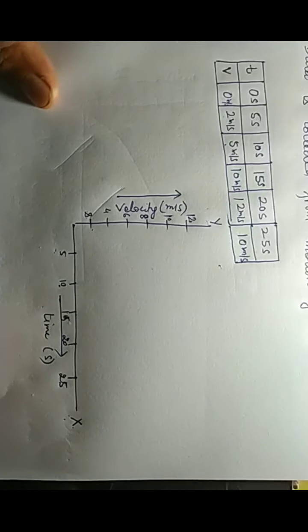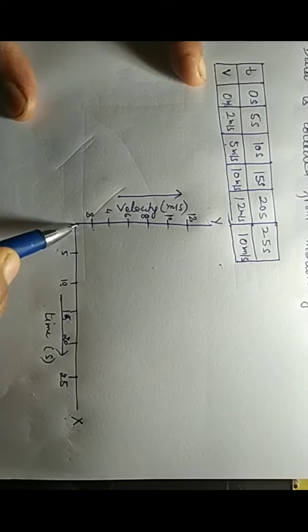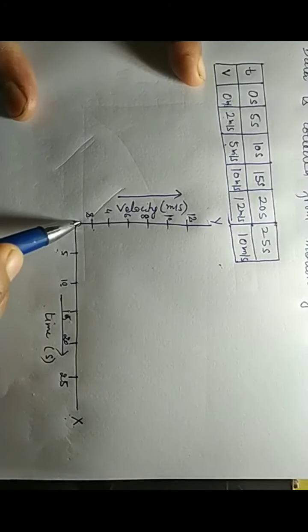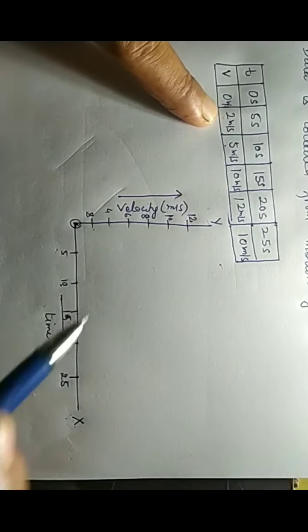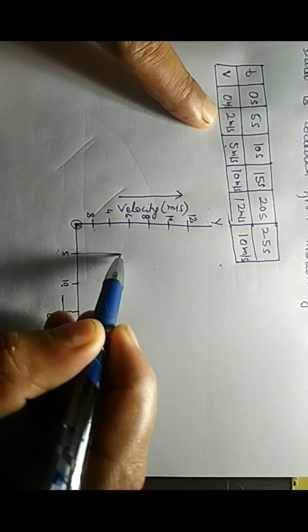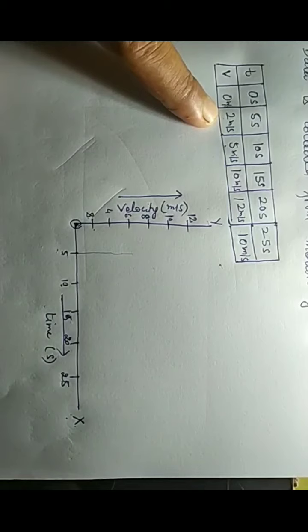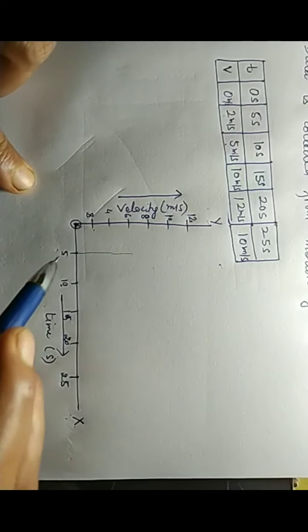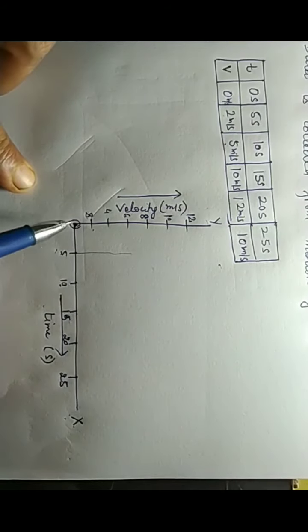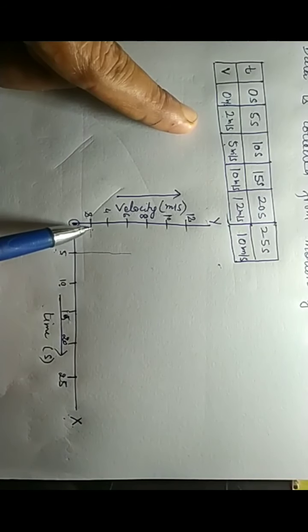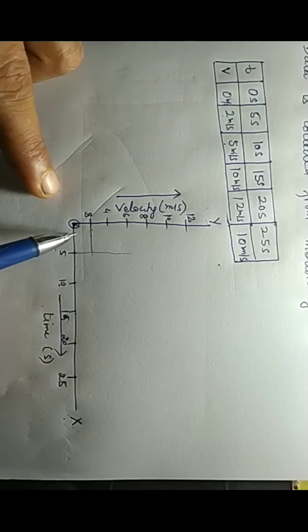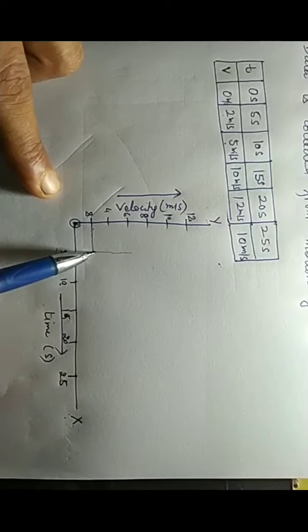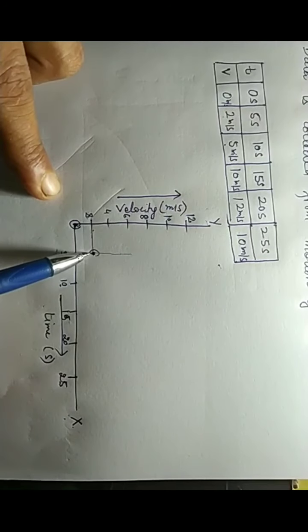Our first point is at the origin (0, 0). For the second point, at 5 seconds the velocity is 2 meters per second. I draw a vertical line from 5 seconds and a horizontal line from 2 meters per second. Where they meet is our second point.